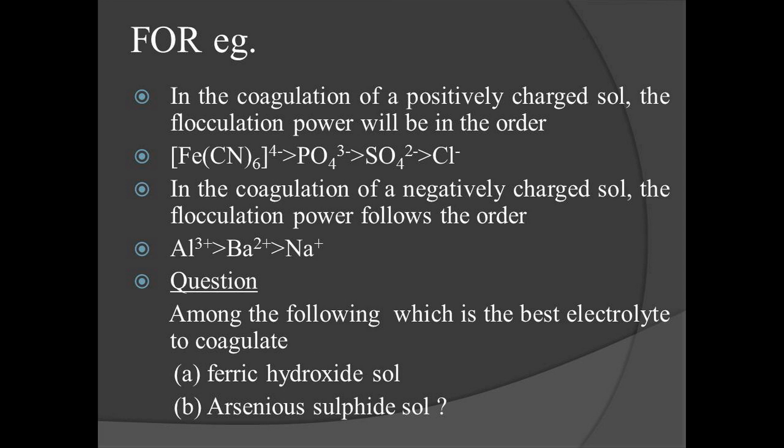Now we will explain the order of flocculation power for positively and negatively charged salts. In the coagulation of a positively charged salt, flocculation power follows the order from highest negative charge to lowest. In the coagulation of a negatively charged salt, the flocculating power is shown by the positively charged ion — greater the charge on the positive ion, greater will be its coagulation power.